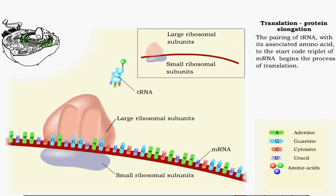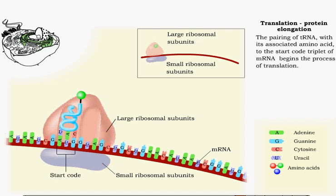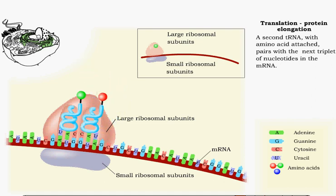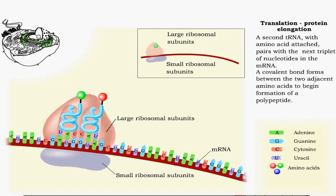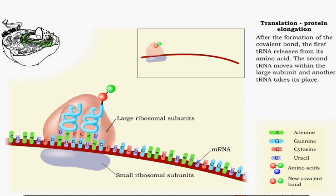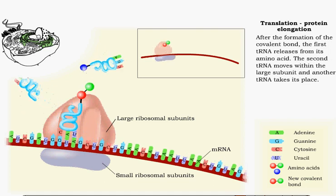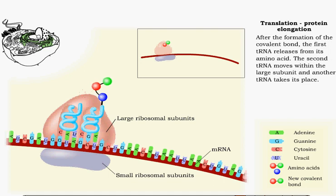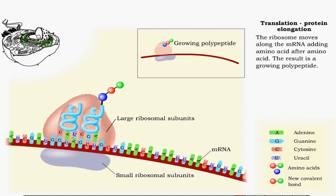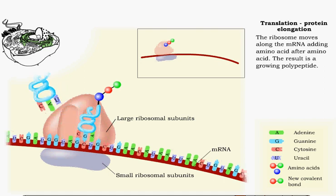Translation begins with the pairing of the first tRNA molecule with the start code nucleotide triplet in mRNA. A second tRNA molecule, pairing with the next mRNA triplet, determines the next amino acid in the growing polypeptide. A covalent bond forms between the pair of amino acids within the large subunit. Once the new amino acid binds to the previous amino acid, the first tRNA leaves. The mRNA shifts, and a new amino acid is added to the growing polypeptide, which grows as more amino acids are bonded as the ribosome moves along the mRNA.